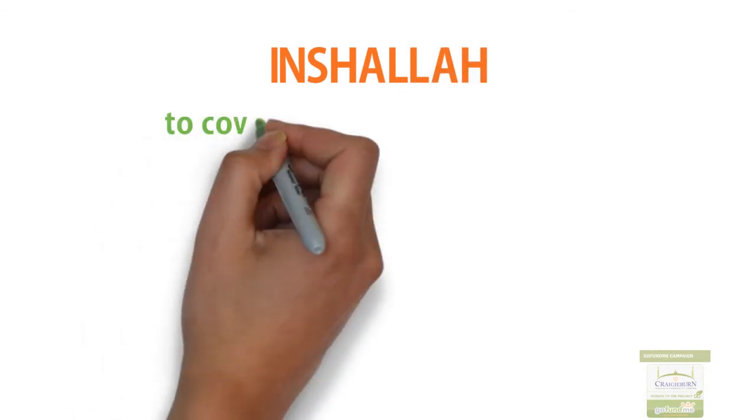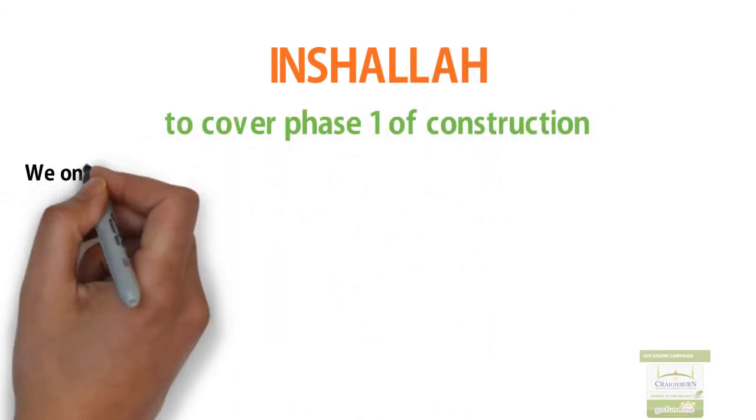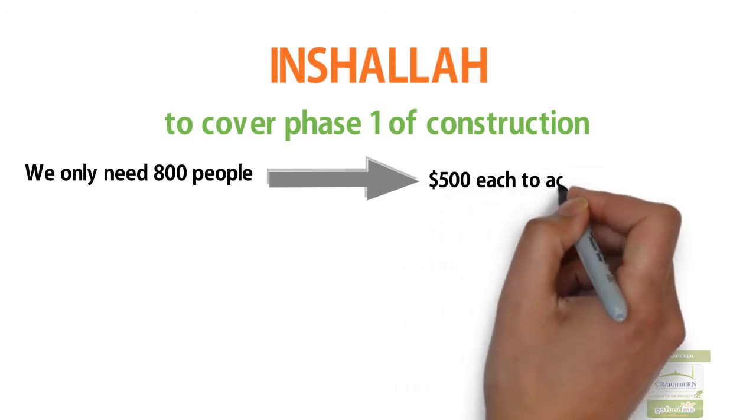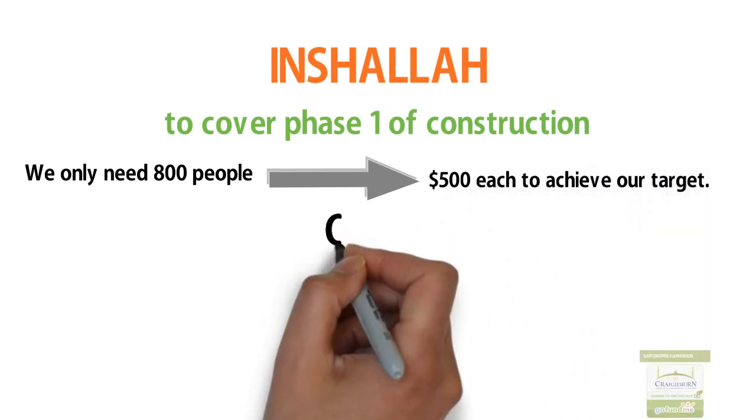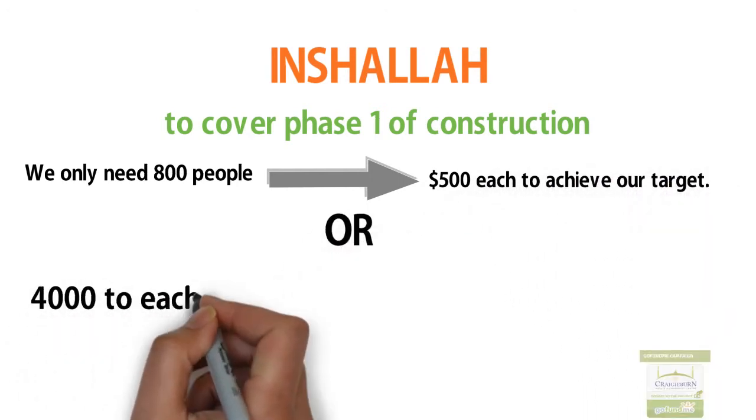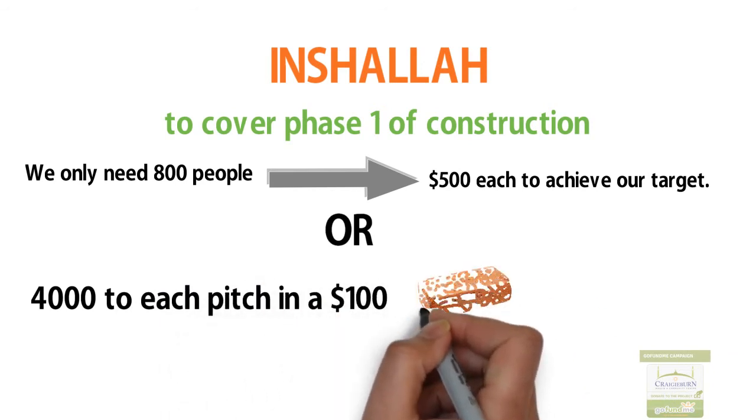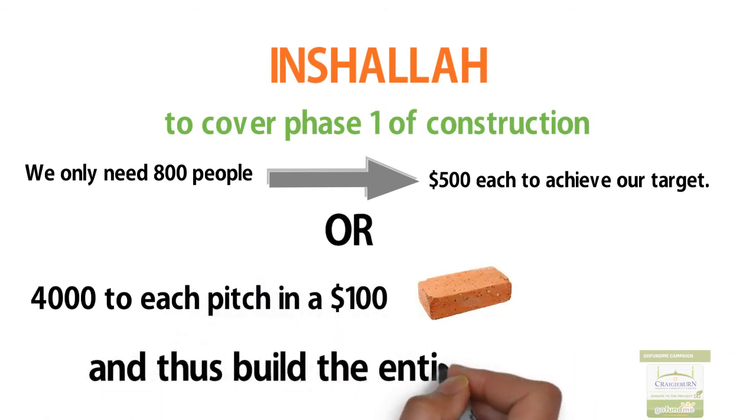Inshallah, to cover Phase 1 of construction, we only need 800 people to donate $500 each to achieve our target, or 4,000 people to each pitch in a $100 brick, and thus build the entire mosque.